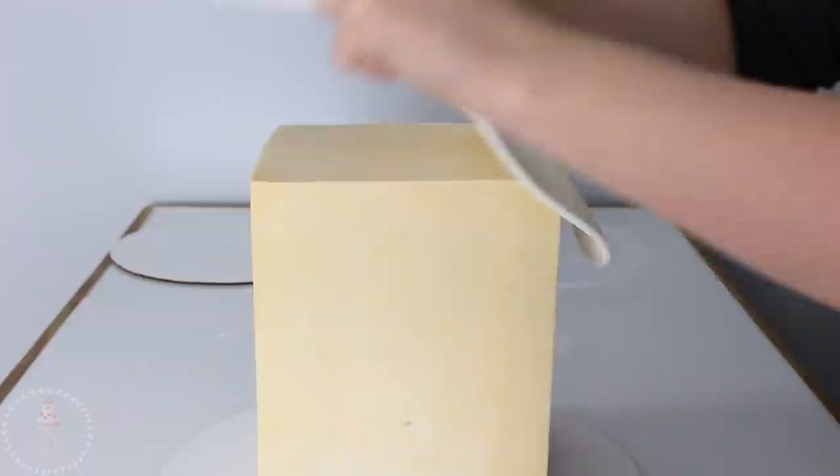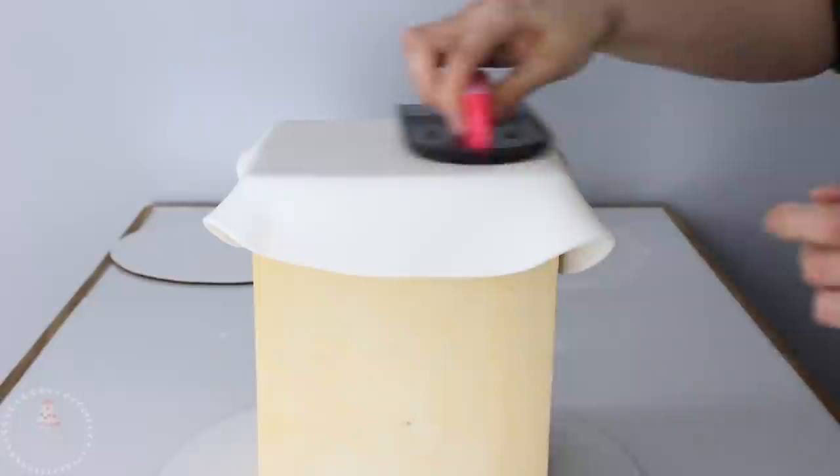I'm rolling some white fondant out on my cornstarch surface to about an eighth of an inch thick, and I'm going to start with the top of my cake. So I'm just draping a piece big enough to cover the top and then smoothing that down with my fondant smoother.